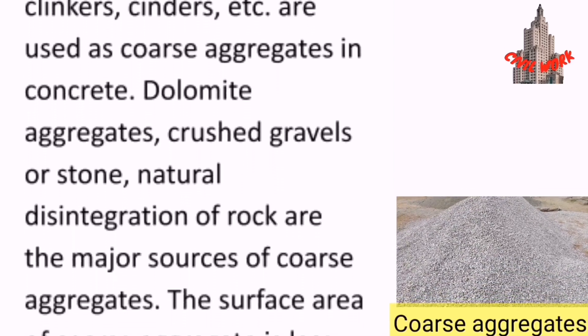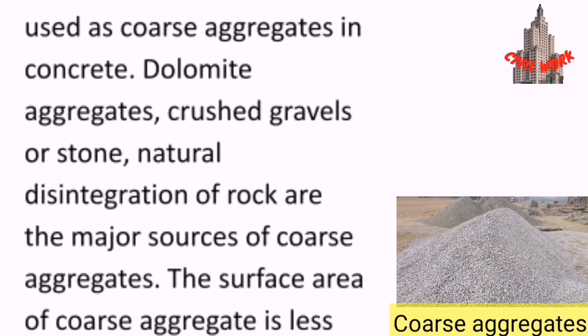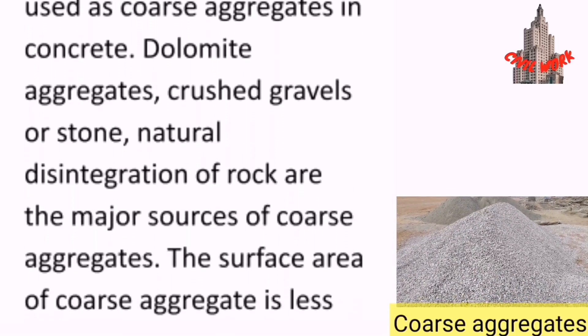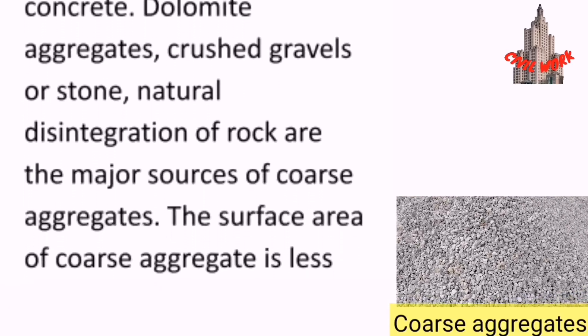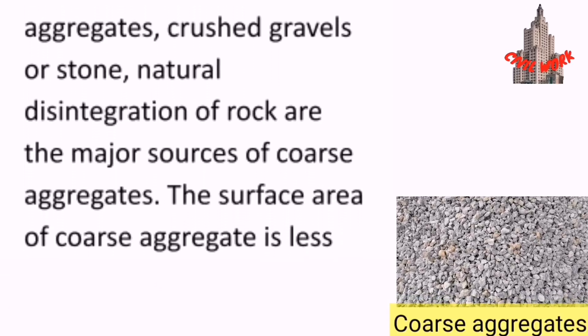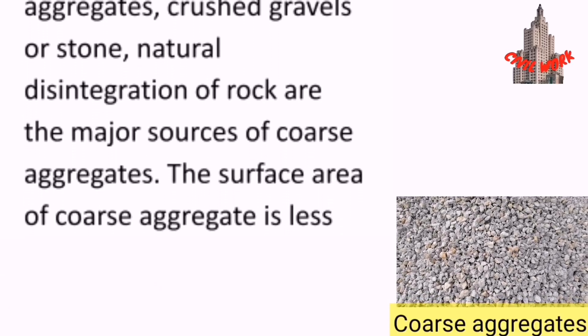Dolomite aggregates, crust, gravels, and stone from natural disintegration of rock are the major sources of coarse aggregates.